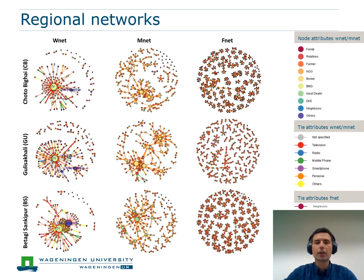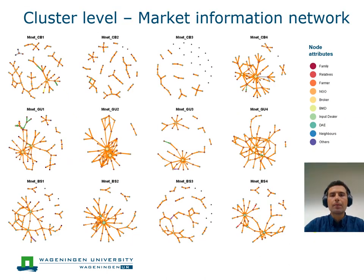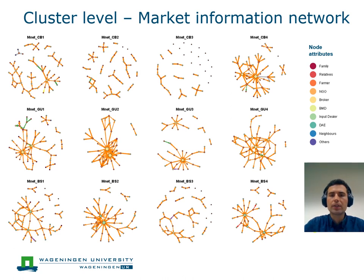The friendship interaction network also showed a strong difference between Chotobikai and Betagishangipur versus the Gulishakali region in terms of out-degree. Farmers in Chotobikai and Betagishangipur seem to be much more connected to other mung bean farmers than in Gulishakali. All nodes in the market network are human actors: the red small nodes are farmers, the bigger yellow nodes are brokers, and the light green ones are input dealers. These are real people that CIMIT or any other institution can work with to improve dissemination systems. When looking at these graphs at cluster level, we see substantial differences between the 12 clusters. These regional differences underline the importance of creating location-specific dissemination strategies, and high-resolution social network graphs can be a powerful decision-making tool to design such interventions.